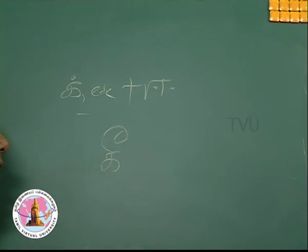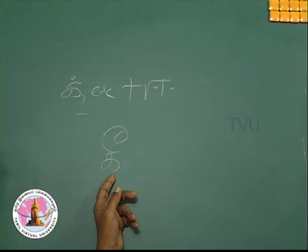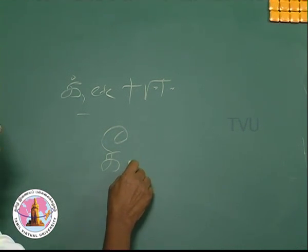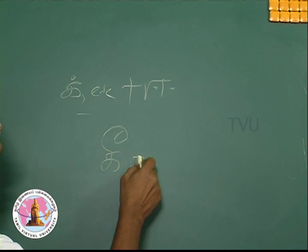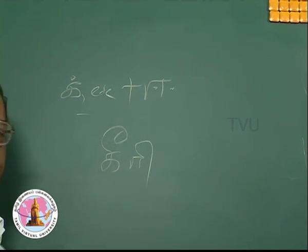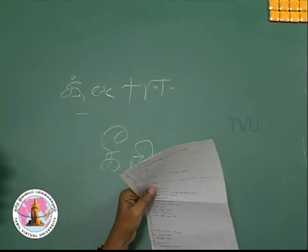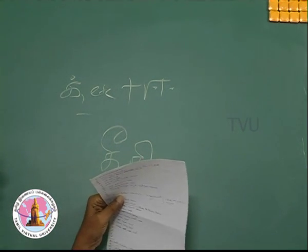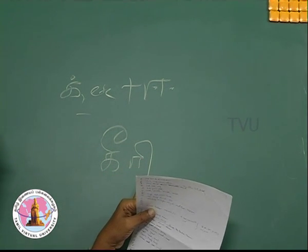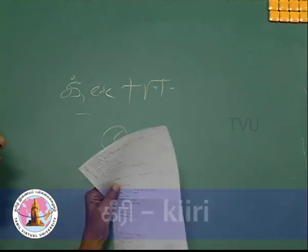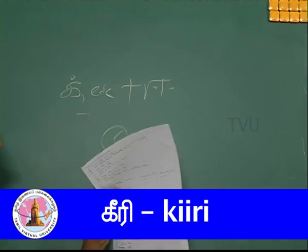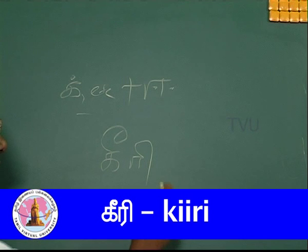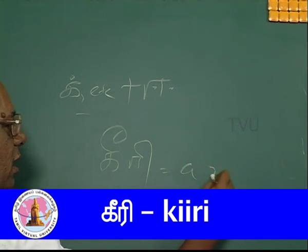This is kee, that is what you have learnt just now. And I am going to give you another letter which I hope you remember. This is re with short e. This is with long ee and re is with short e. Kee, re, kee, re, keere is a mongoose.